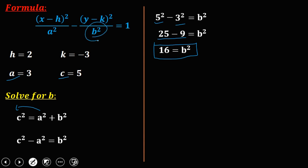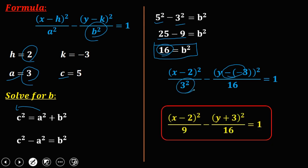Okay, so after that, just substitute all the values to this formula. So we have h is 2, then k is negative 3, then a is 3 squared, and b squared is 16. Then you simplify: (x - 2)²/9 - (y + 3)²/16 = 1. So this is now the equation of our hyperbola.